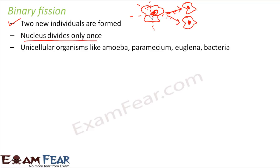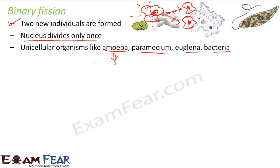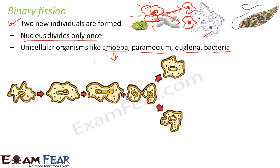Examples of organisms that undergo binary fission include unicellular animals like amoeba, paramecium, euglena, and bacteria. Different organisms split in different ways to produce two equal halves. In amoeba, since it doesn't have a fixed shape, the splitting can happen across any plane.